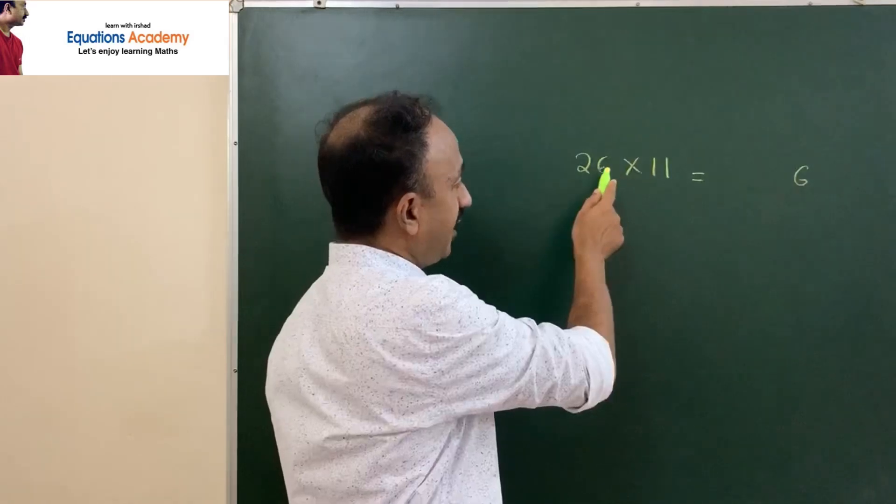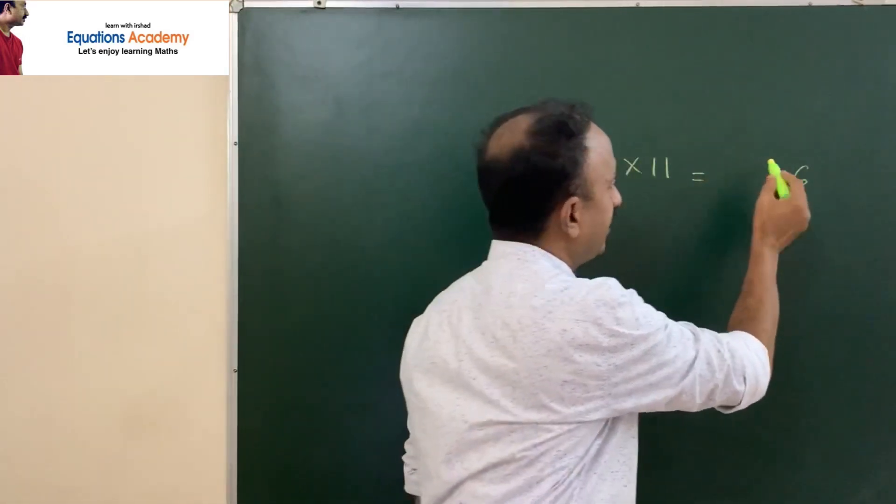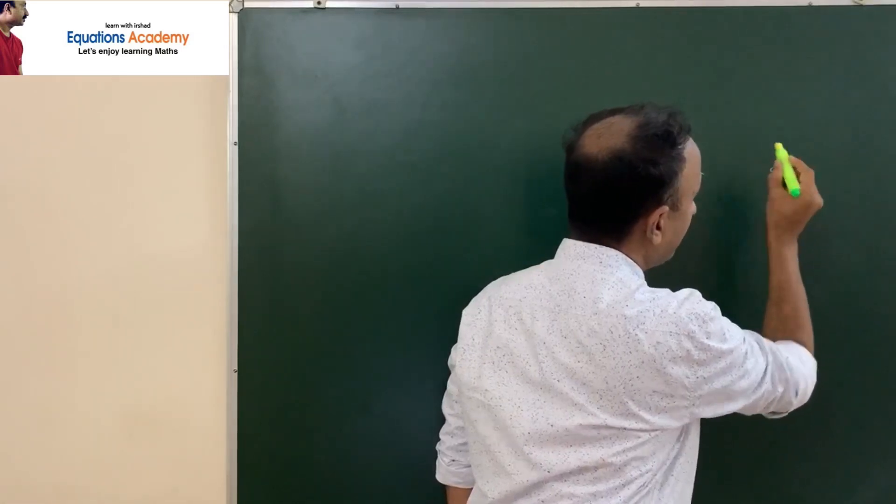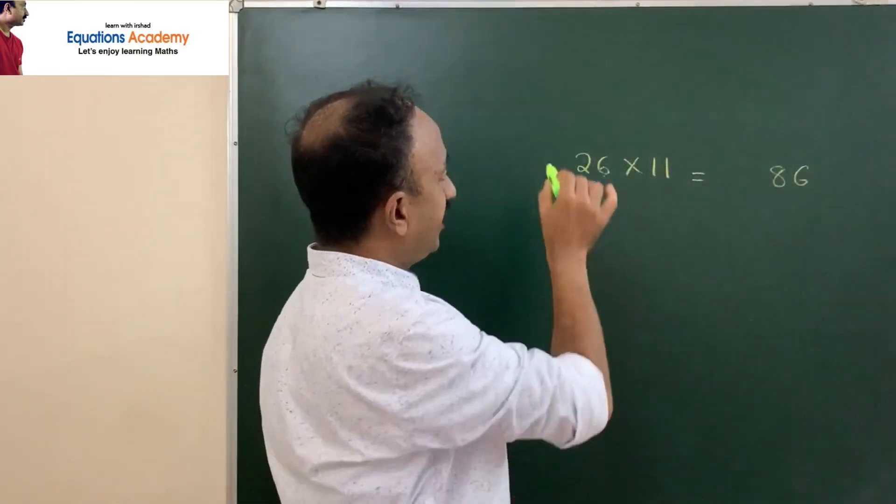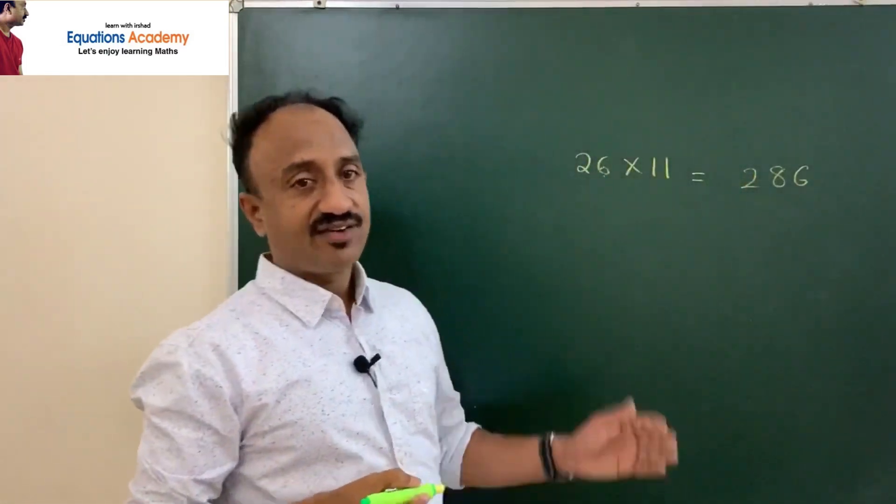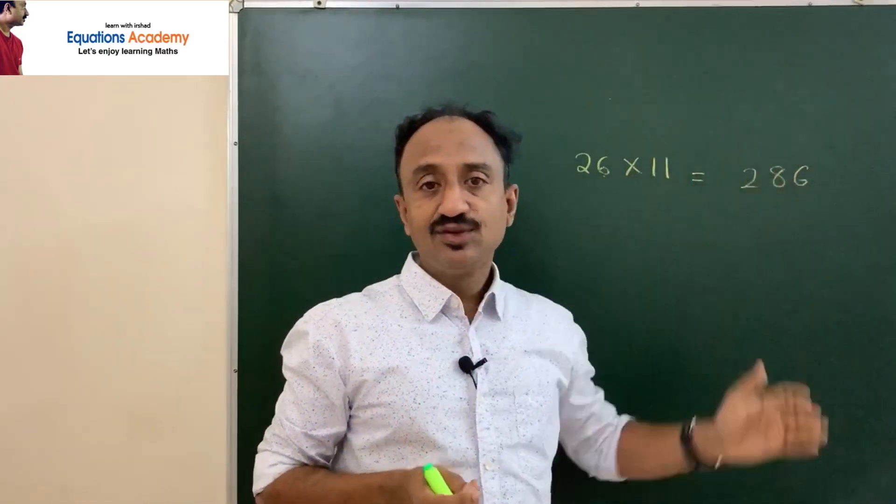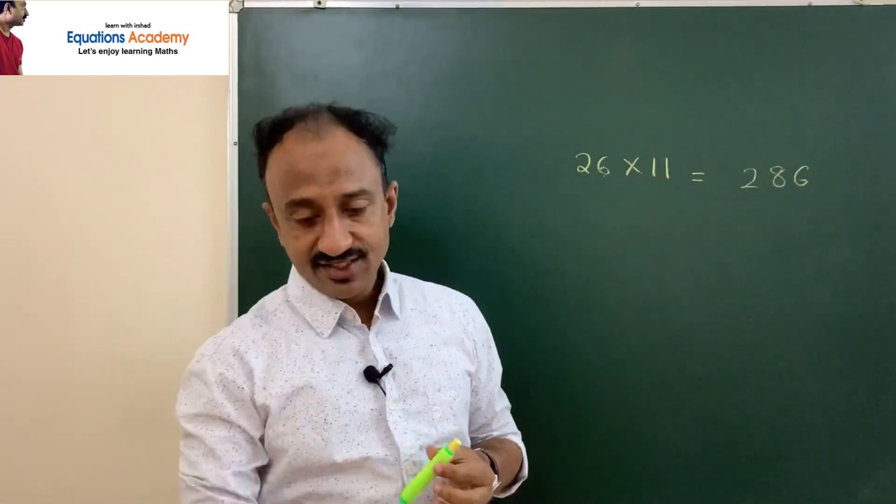Then add the 6 with this 2. 6 plus 2 is 8. Keep this 2 as it is. So our answer is 26 times 11 is equal to 286.